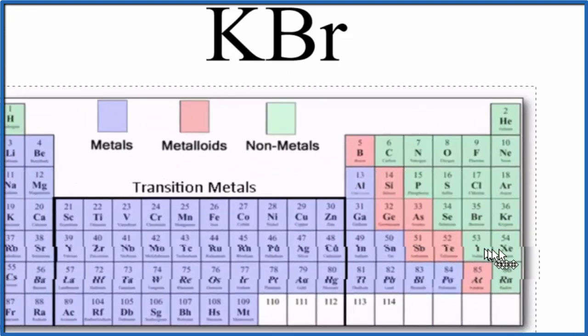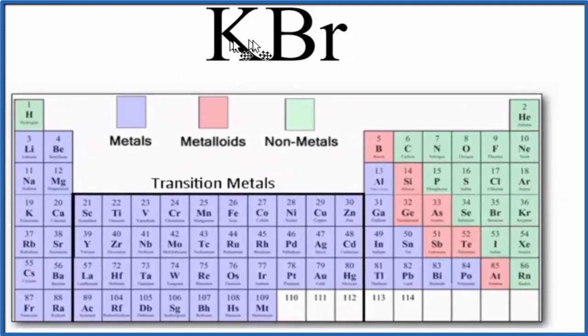First, we could look on the periodic table and figure out whether potassium and bromine were metals or nonmetals. Potassium right here, this is a metal. So we have a metal and then bromine right here in the green, that's a nonmetal.